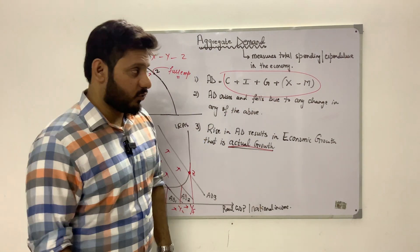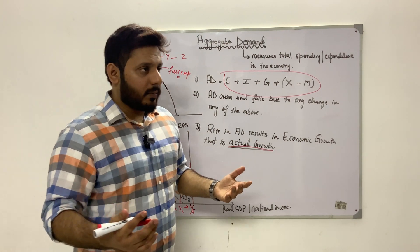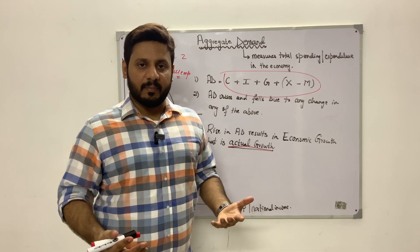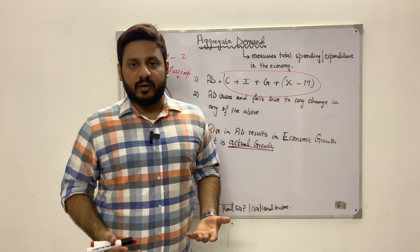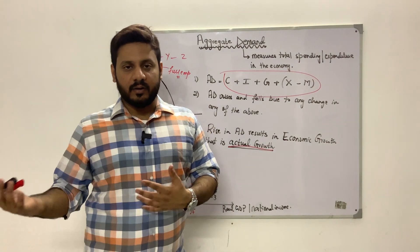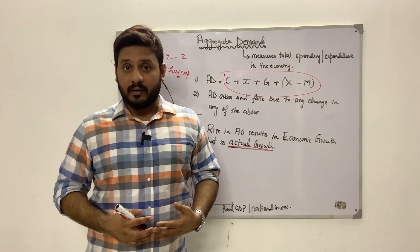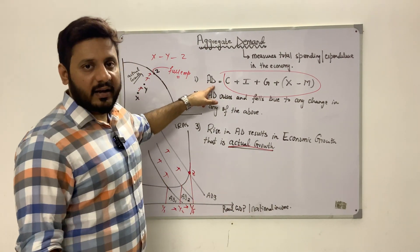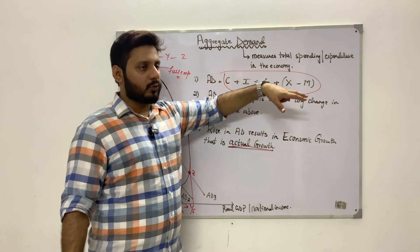Exports may rise or imports may fall because domestic goods have become competitive — perhaps because the price level or inflation is falling, making domestic goods more competitive. Or the currency may have depreciated — a fall in the value of the currency makes imports more expensive and exports cheaper, resulting in a rise in net exports and therefore a rise in aggregate demand.